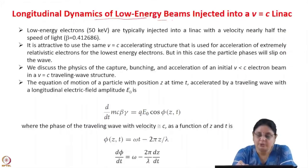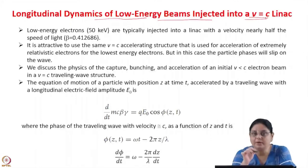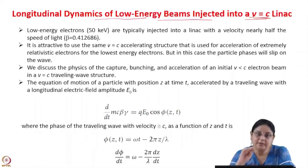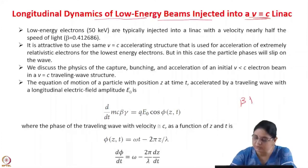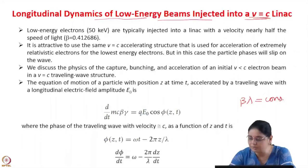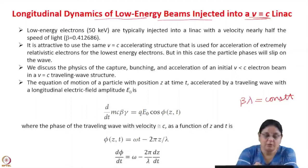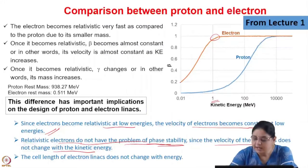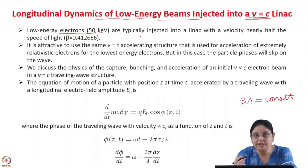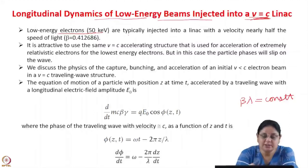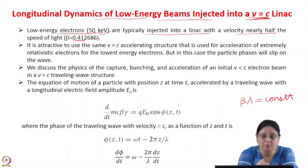Let us see the longitudinal dynamics of low energy beams injected into a v=c linac. Electron linacs are generally known as v=c linacs because they are designed such that the velocity of the electron has become constant and the cell length is constant — beta*lambda or beta*lambda/2 is fixed. Low energy electrons, typically at 50 keV, become relativistic at a few MeV. In the region of 50–100 keV, they are still non-relativistic, but it is attractive to use the same v=c accelerating structure to save cost — otherwise, you would need to design two separate linacs.